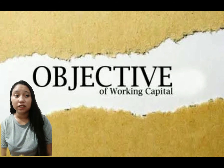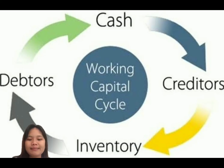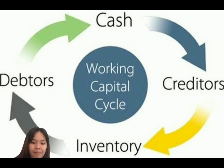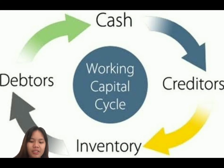The working capital cycle refers to the amount of time it takes to convert net current assets and current liabilities to cash. It is the time between the payment for goods to suppliers and the receipt of cash from the sale of the same products. The longer the cycle, the longer the business is tying up capital without earning a return.